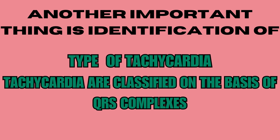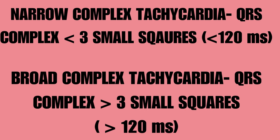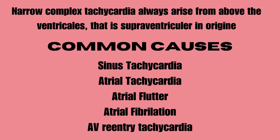Tachycardias are classified into types on the basis of QRS complexes. Narrow complex tachycardia refers to a QRS complex less than 3 small squares, and broad complex tachycardia refers to a QRS complex more than 3 small squares. Narrow complex tachycardia always arises from above the ventricles — that is, supraventricular in origin. Common causes include sinus tachycardia, atrial tachycardia, atrial flutter, atrial fibrillation, and AV reentry tachycardia.